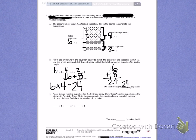Letter C. Reese brings 4 vanilla cupcakes for the birthday party. Show Reese's vanilla cupcakes on the picture in Part A. Then fill in the unknowns in the equation below to match the new picture. Solve to find the total number of cupcakes. So first I'm going to add the 4 vanilla cupcakes that Reese brought by adding another row of vanilla cupcakes.